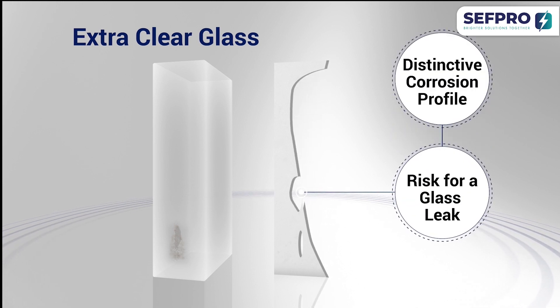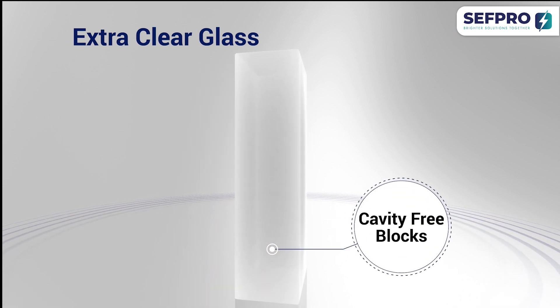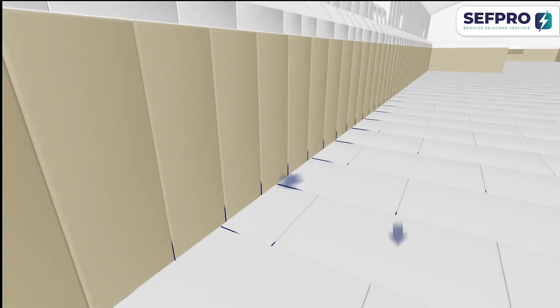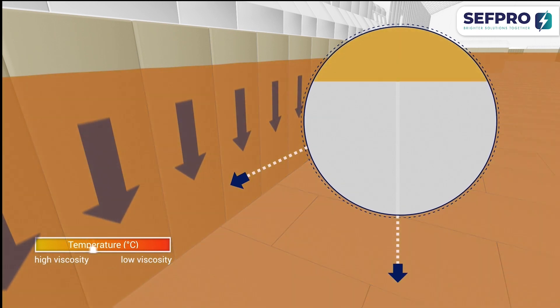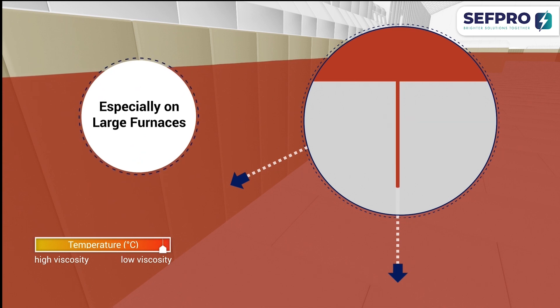This is why most people in the extra clear glass industry use cavity-free blocks, which is a good choice. But it doesn't take into account another weak point: the joints. Because of lower glass viscosity and pressure near the melter bottom, extra clear glass can more easily infiltrate joints, especially on large furnaces, no matter how much effort is put into prevention.